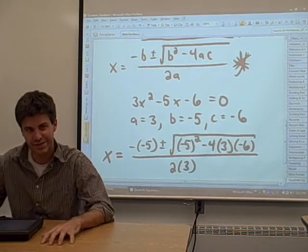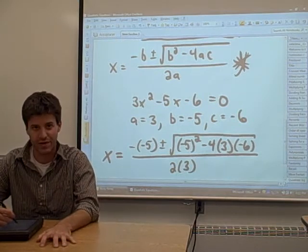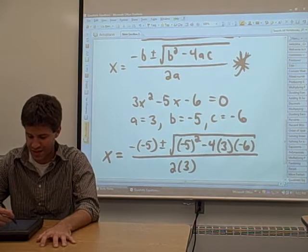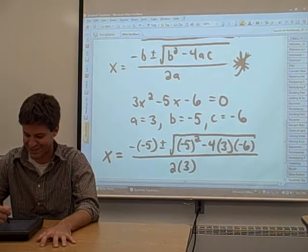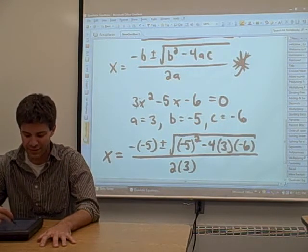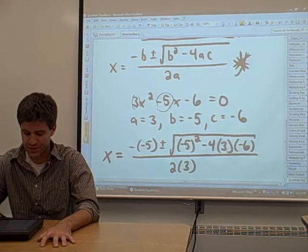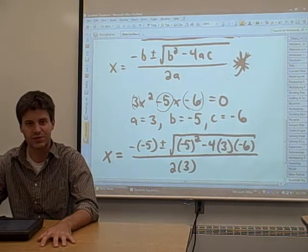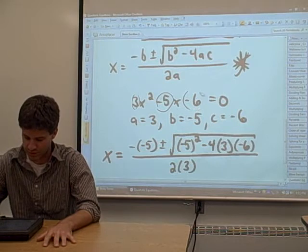Okay, great. So what we did is we were given a quadratic equation, 3x squared minus 5x minus 6 equals 0. We decided that A was going to be 3, B was going to be negative 5, and C was going to be negative 6, just from the equation we were given.